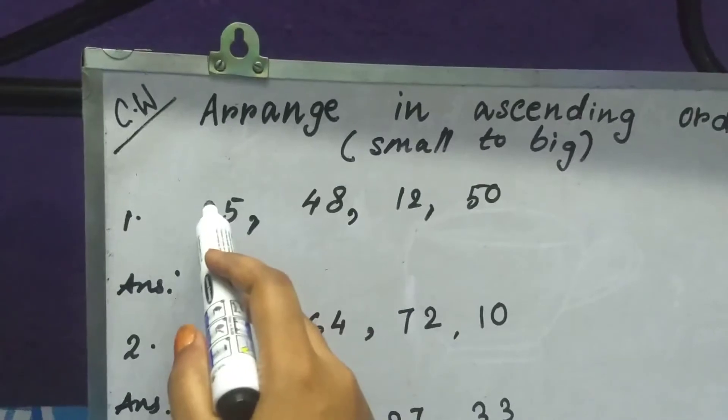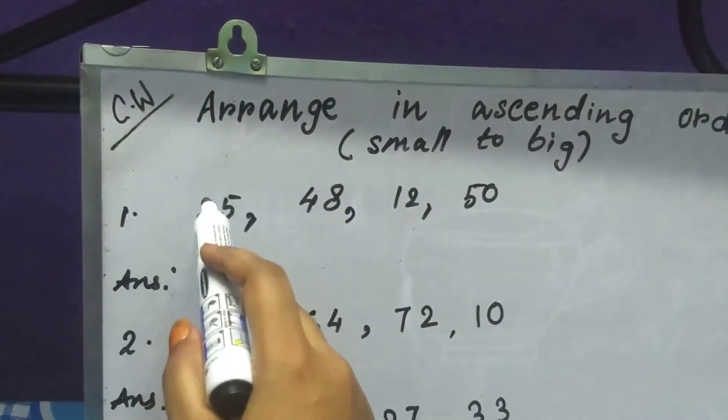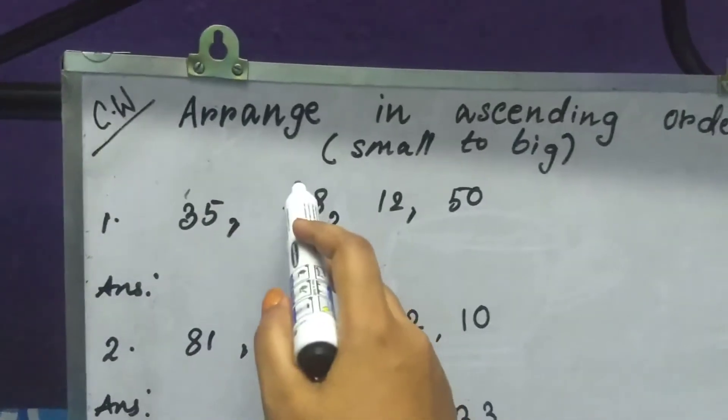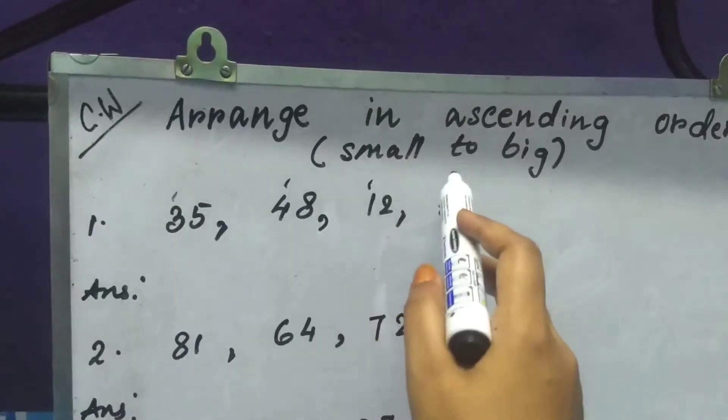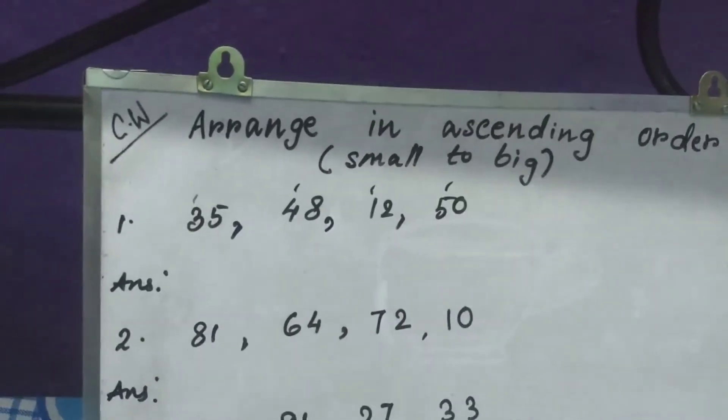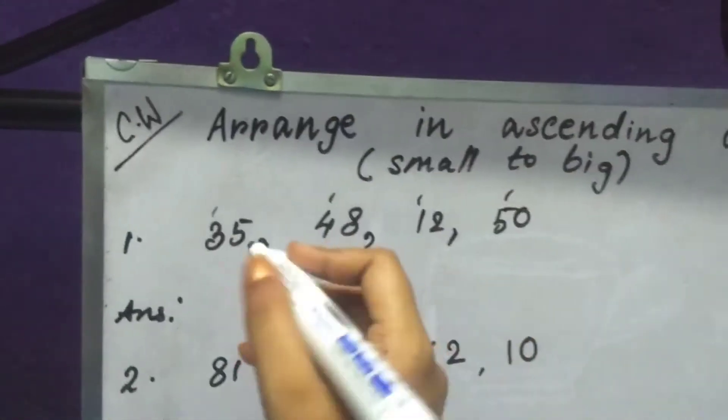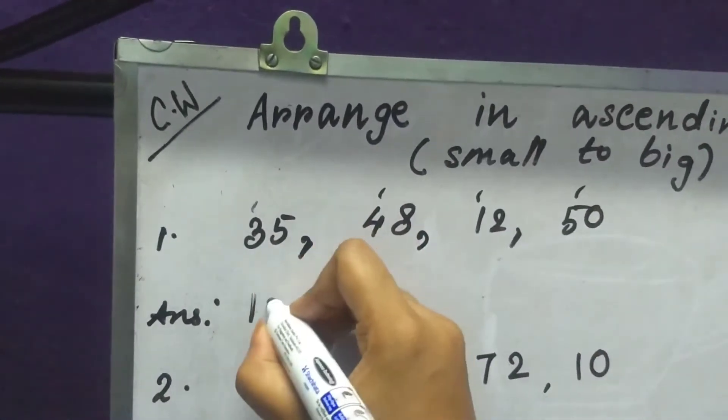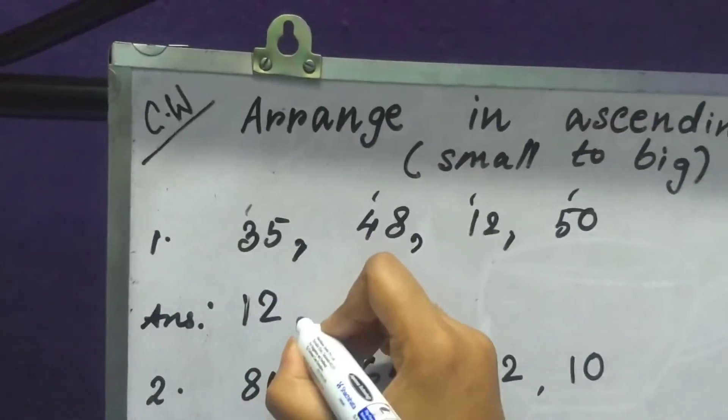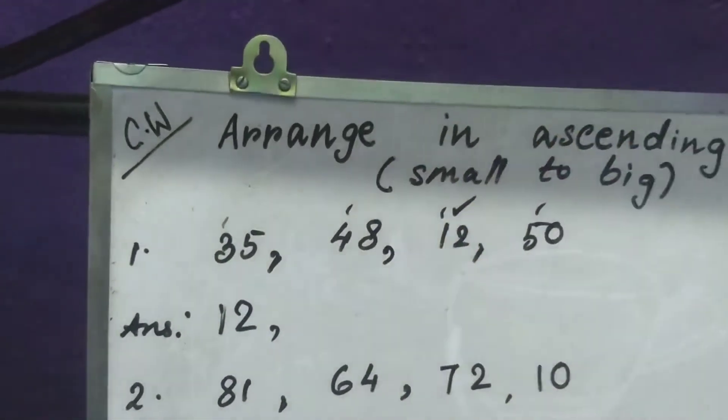Now we will see the number in the tens place: 3, 4, 1 and 5. Now which is the smallest? 1, so 12. So first we will write 12. Now put a tick here.